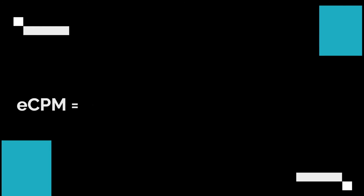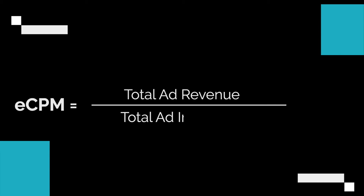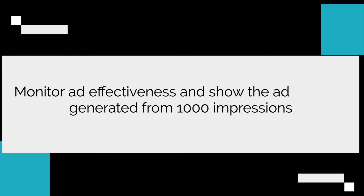Here is the formula. eCPM is equal to total ad revenue divided by total ad impressions and multiplied by a thousand. This is the key metric for publishers to monitor their ad effectiveness and show the ad revenue generated from one thousand impressions.